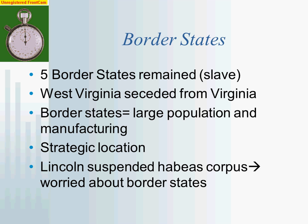The reason Lincoln suspended habeas corpus in Maryland was a real fear that if Maryland were to secede, Washington, D.C. would be completely cut off from the North. Remember, Washington, D.C. had been carved out of Maryland and Virginia — and Virginia had already seceded. Had Maryland also seceded, Washington, D.C. would have been completely surrounded by hostile territory. So it was extremely important for Lincoln to maintain control of Maryland. Troops were also sent to Missouri and West Virginia to maintain control over those border states as well.